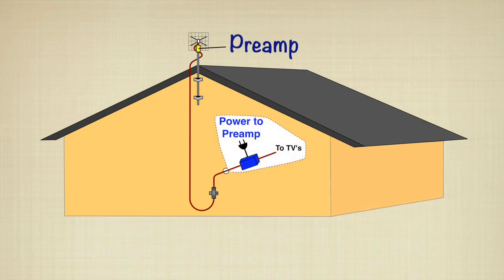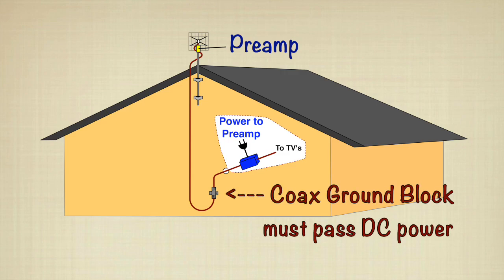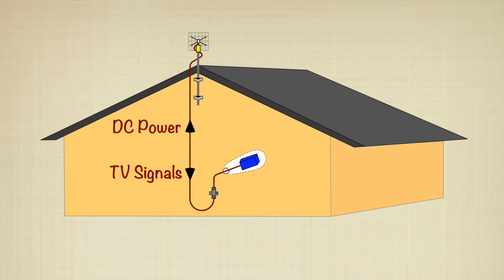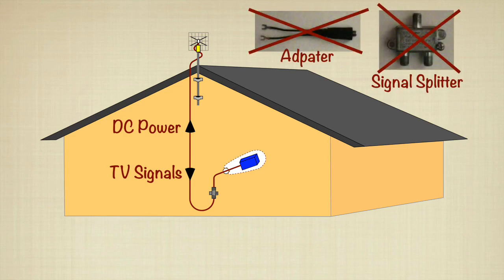If you're using a preamp, connect the cable directly into the preamp power unit inside the home. Additionally, make sure the coax ground block passes DC power. Most do. The antenna preamp gets DC power through the coax cable. The cable between the preamp and power unit should not have any signal splitters or 300 to 75 ohm cable adapters.